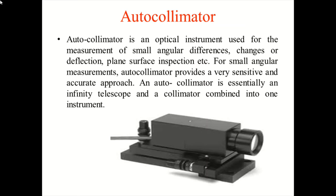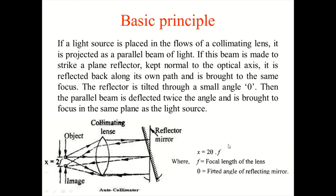This is a pictorial view of the autocollimator. This is the basic principle. If a light source is placed in the focus of a collimating lens, it is projected as a parallel beam of light.